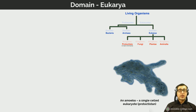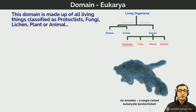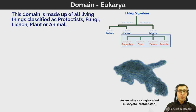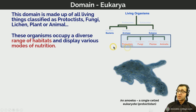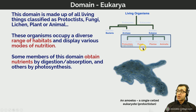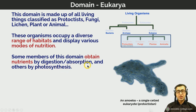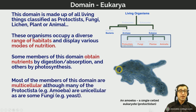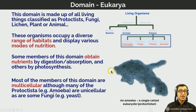The Eukarya domain includes all living things classified into five kingdoms, occupying a diverse range of habitats and displaying various types of nutrition. Some members obtain nutrients by digestion and absorption — including some protists, fungi, and animals — while others obtain nutrition by autotrophy, such as photosynthesis. Most members of the eukaryotic domain are multicellular, but protists like amoeba and some fungi such as yeast are unicellular.